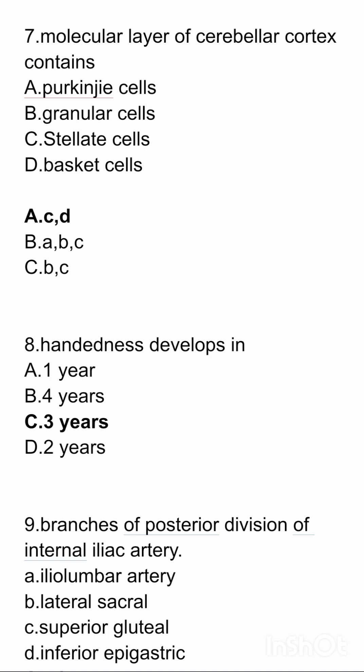The molecular layer of the cerebral cortex contains which cells? Options are Parkinson's cells, granular cells, stellate cells, basket cells. Here the answer is stellate cells and basket cells — options C and D.